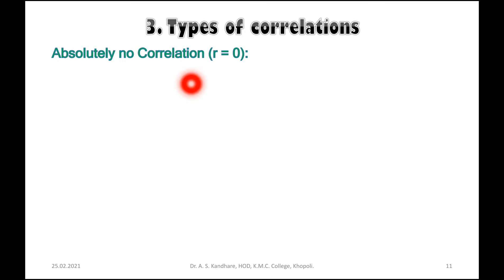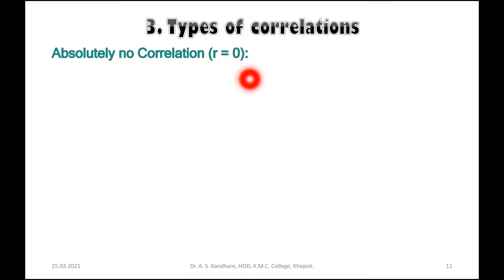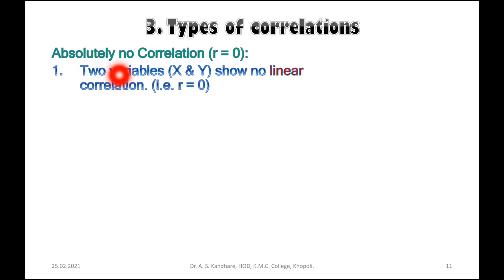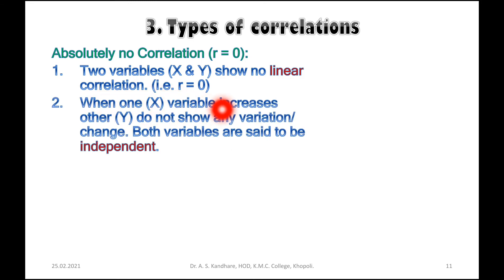Finally, absolutely no correlation: when the coefficient of correlation value is zero, there is no correlation between the two variables. The two variables x and y show no linear correlation, that is r equals zero, indicating that x and y variables are not correlated. When one x variable increases, the other variable y does not show any variation or change.